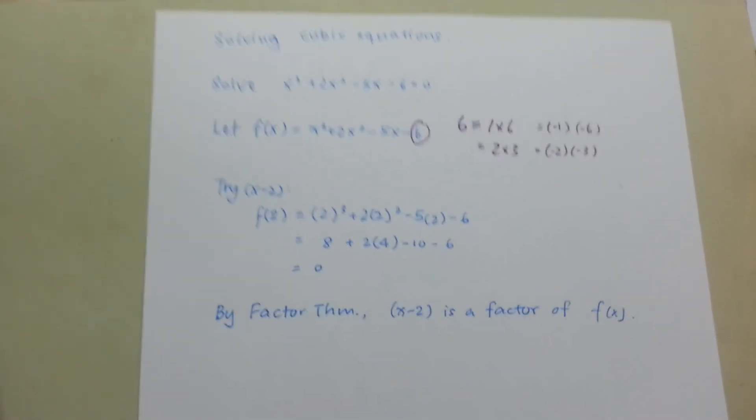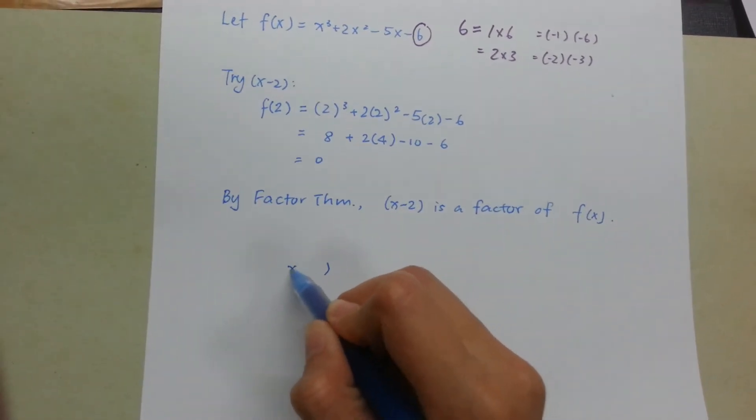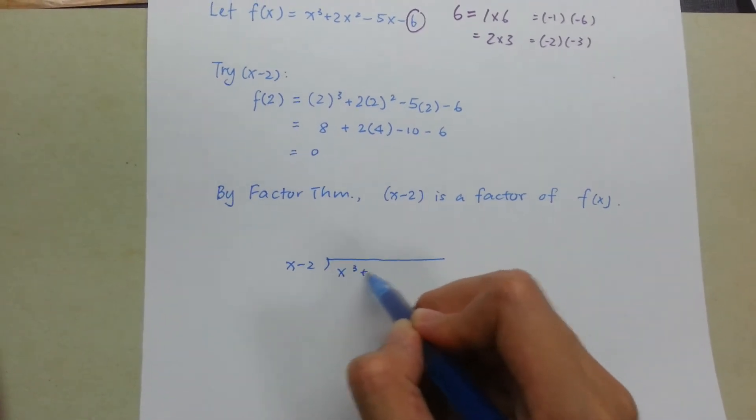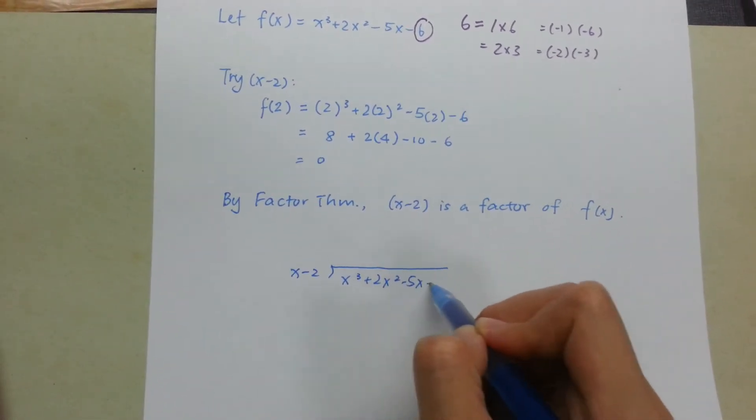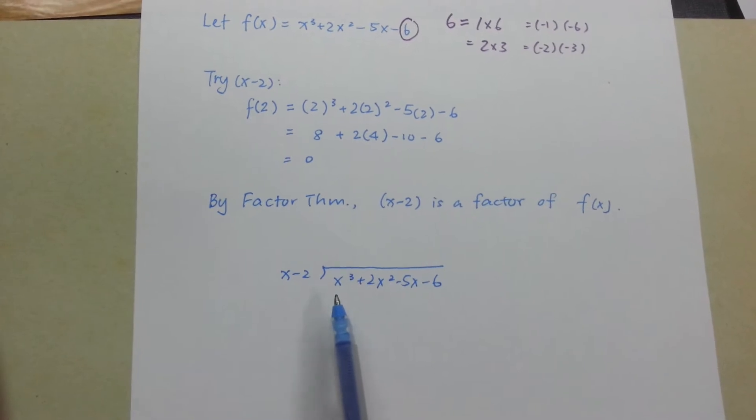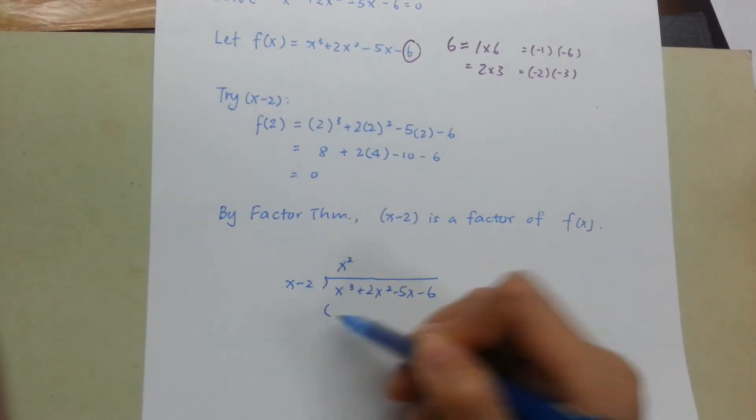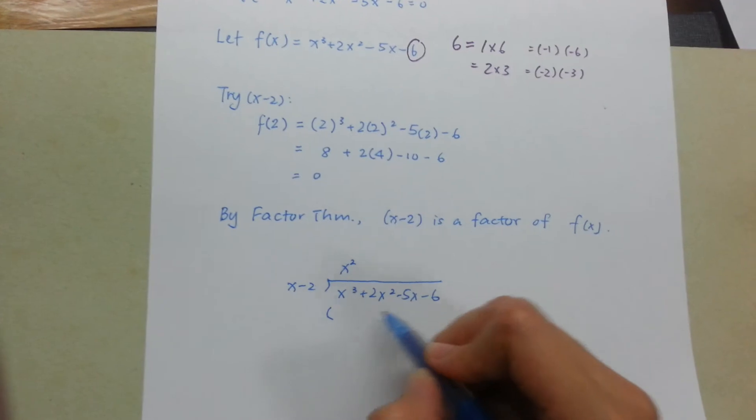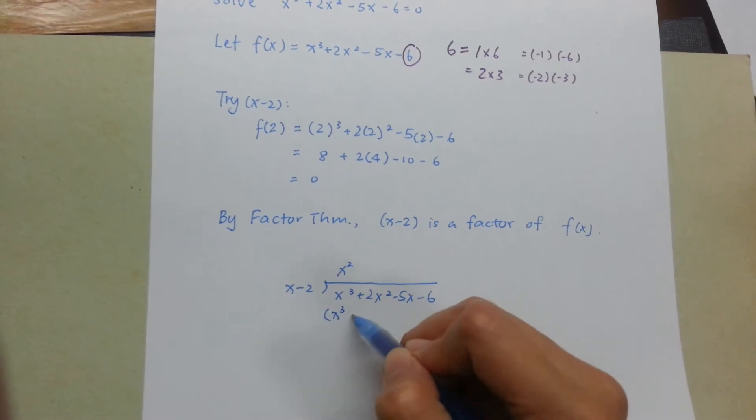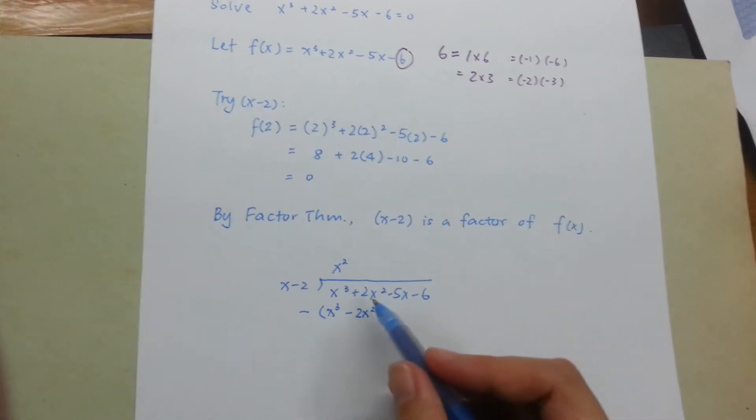And after this, we do a long division. Let's look at the first term, x³. When I divide it by x-2, I will need x². So now I start a bracket. x² times (x-2), I'll write it in my bracket. So x² times x is x³, x² times -2 is -2x².